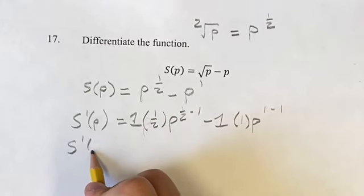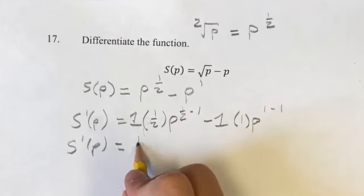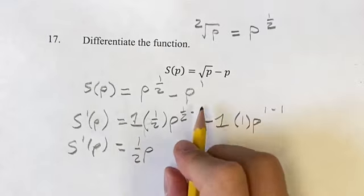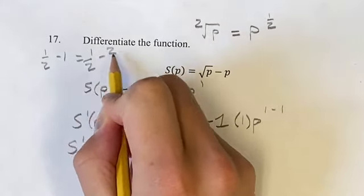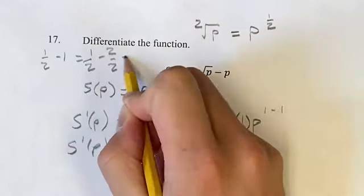To our new exponent is the old one minus 1. Now this is something we can simplify. The derivative is 1 times 1/2, which is 1/2 p to the 1/2 minus 1, equals 1/2 minus 2/2, equals negative 1/2. So 1/2 p to the negative 1/2.